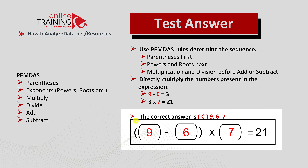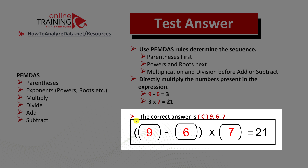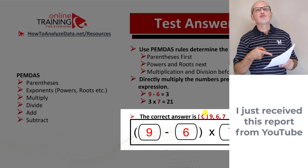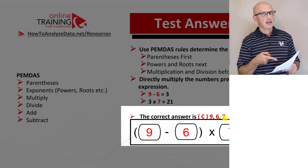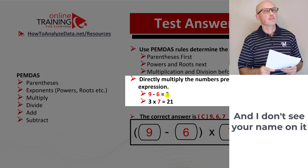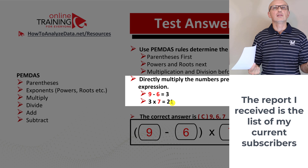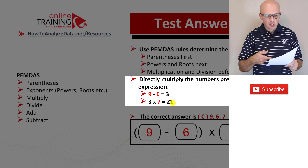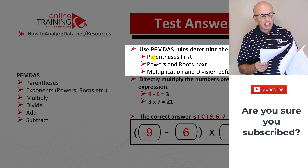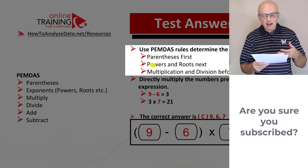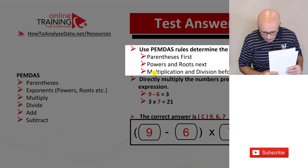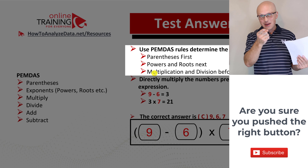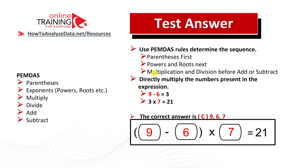To solve this correctly, remember that calculations inside parentheses are done first. You need to find a set of numbers where the result from the parentheses multiplied by the third number equals 21. The correct combination is choice C: 9 6 7. Let's validate: 9 minus 6 equals 3, and 3 multiplied by 7 equals 21. Remember PEMDAS: do calculations in parentheses first, powers and roots next, then multiplications and divisions before additions and subtractions.